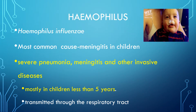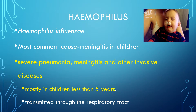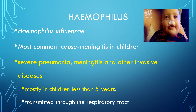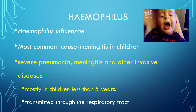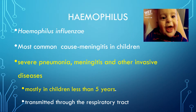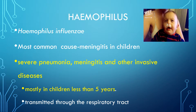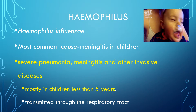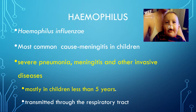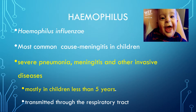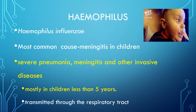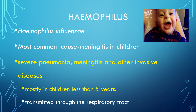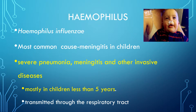Briefly about Haemophilus influenzae: Haemophilus influenzae are found on the mucous membranes of the upper respiratory tract in humans. Haemophilus is the most common cause of meningitis in children and also can cause severe pneumonia and other invasive diseases. These are quite common among children less than 5 years of age and are transmitted via the respiratory tract.